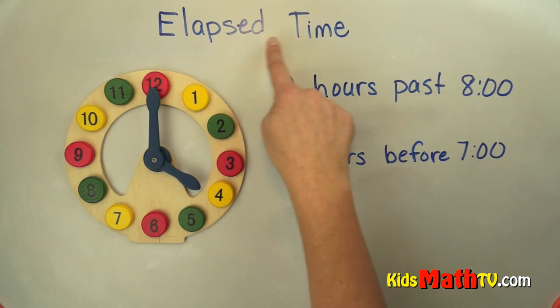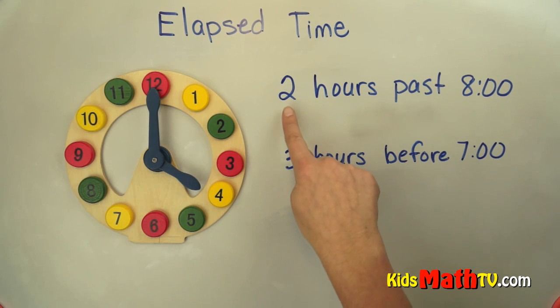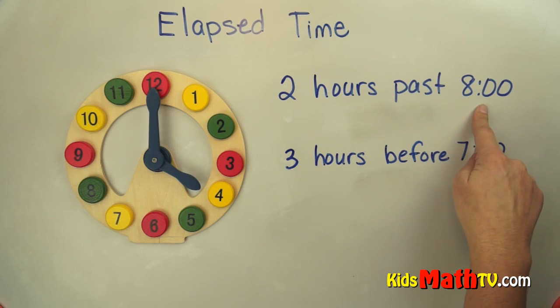In this lesson we'll talk about elapsed time. So we want to know what time will it be two hours past eight o'clock.